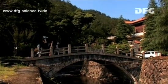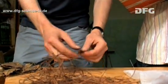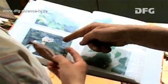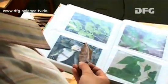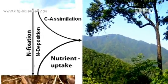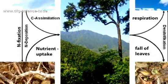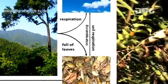The international team of researchers in China is primarily attempting to answer one key question: how does a forest ecosystem function and what role does biodiversity play in this? To answer this question, the researchers are studying the role of carbon and nitrogen in an ecosystem.